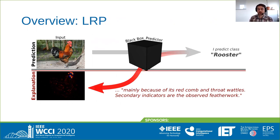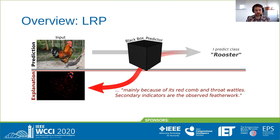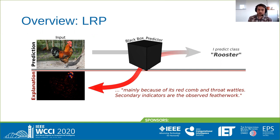The goal of LRP is to precisely inform and quantify which features a neural network predictor uses for prediction and decision-making. It aims to identify the features used for prediction and also how those features are used — meaning whether a certain feature speaks for a predicted class or speaks against it.